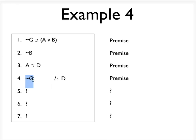So, let's start with the not G. You see, not G is the antecedent of this conditional on line one. And if I have a conditional on one line and an antecedent of that conditional on another line, then I can derive the consequent of that conditional, in this case, A or B.